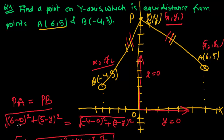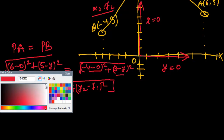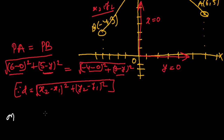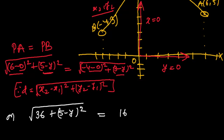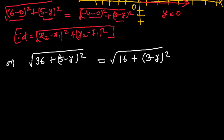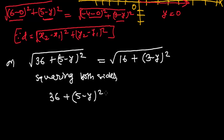So x₂ − x₁ gives 6 − 0 for PA, and the y-difference is 5 − y. For PB, x₂ − x₁ gives −4 − 0, and the y-difference is 3 − y. Setting PA = PB: √[36 + (5−y)²] = √[16 + (3−y)²]. Now squaring both sides: 36 + (5−y)² = 16 + (3−y)².